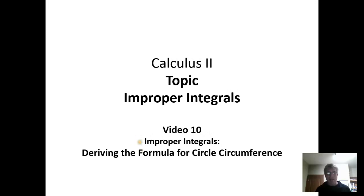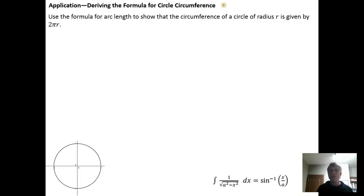In this video, we're going to do an application of improper integrals, and we're going to derive the formula for circle circumference. As a recall, the formula for the circumference of a circle is two times pi times the radius of the circle.